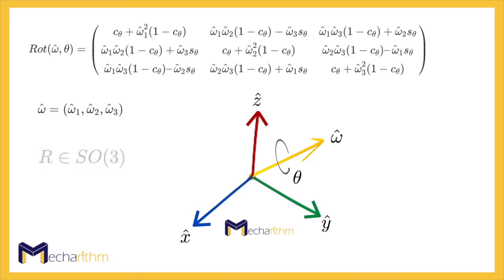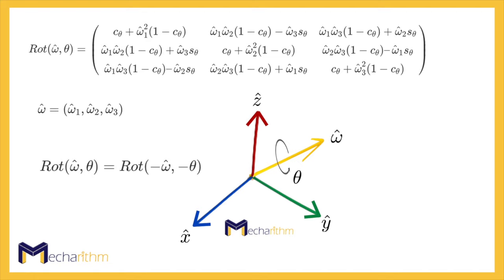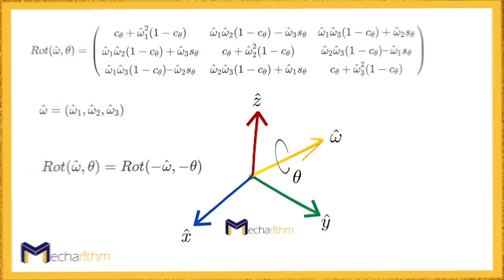Note that any R in SO(3) can be obtained by rotating from the identity matrix by some theta about some omega. Also note that rotation about minus omega by minus theta is the same as the rotation about omega by theta. These are topics of the next video.